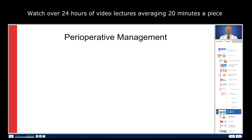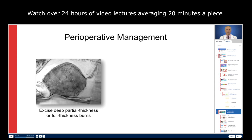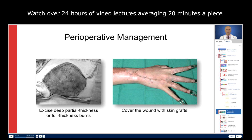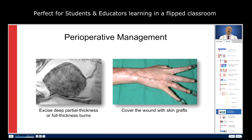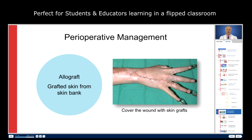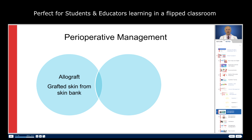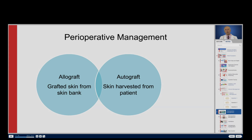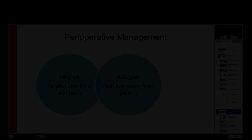Burn injured patients often require operative care to excise deep partial thickness and full thickness burns, and at the same sitting, cover the resulting surgical wound with various types of skin grafts. Grafted skin that comes from a skin bank is called allograft, but most commonly the grafted skin is harvested directly from the injured patient and is referred to as autograft. This distinction is important to make in perioperative anesthesia planning.